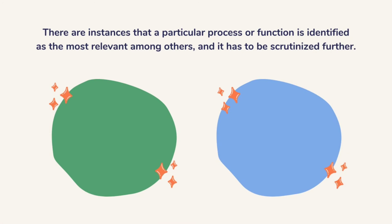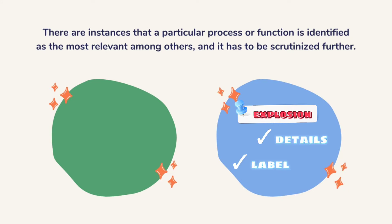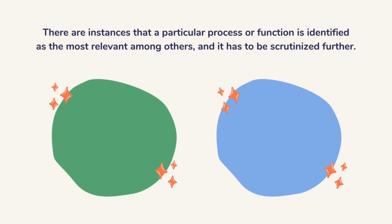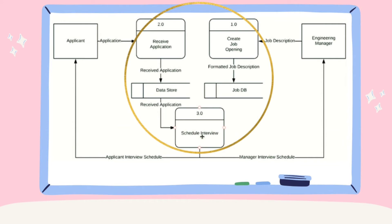There are instances that a particular process or function is identified as the most relevant among others, and it has to be scrutinized further. The difference between level 0 and the explosion, aside from its details, is the label for each process. Meaning, a level 0 data flow diagram becomes more detailed if it gets exploded. Using our hiring system example, the explosion shows us more details about the processes compared to the simple level 0 data flow diagram.